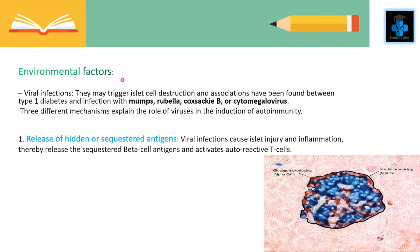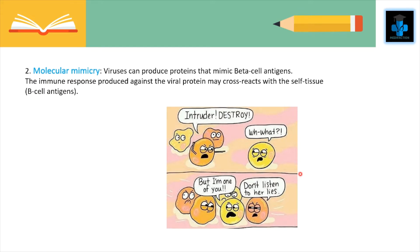Environmental factors include viral infections, which may trigger islet cell destruction. Associations have been found between type 1 diabetes and infection with mumps, rubella, Coxsackie B, or cytomegalovirus. Three mechanisms explain the role of viruses: first, release of hidden or sequestered antigens — viral infections cause islet injury and inflammation, releasing sequestered beta cell antigens and activating autoreactive T-cells. Second, molecular mimicry — viruses can produce proteins that mimic beta cell antigens, and the immune response against the viral protein may cross-react with the beta cell antigens.